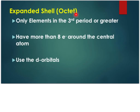We can also have an expanded shell, or expanded octet. Only elements in the third period or greater can have an expanded shell. This means they have more than eight electrons around the central atom, because they can use their d-orbitals. Once we get to the third period, the d-orbital is available for use, so those elements can have more than eight electrons around the central atom.